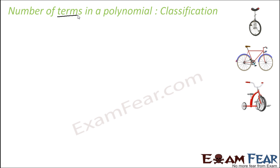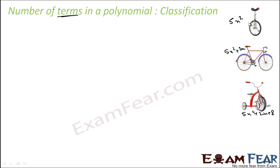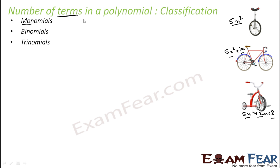Now we'll try to classify polynomials by the number of terms. For example, it can have only one term, for example 5x squared; two terms, for example 5x squared plus 2x; three terms, for example 5x squared plus 2x plus 8. So if you see here: one term, two terms, three terms.